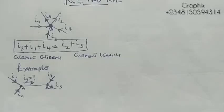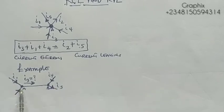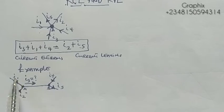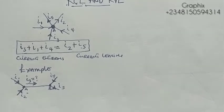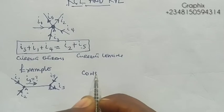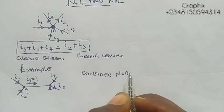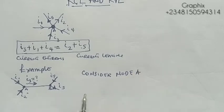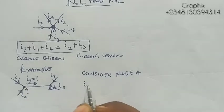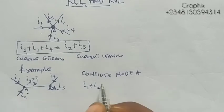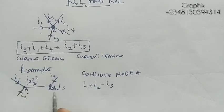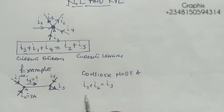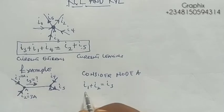Now looking at this example, we have two nodes: node A and node B, with currents coming in and leaving. At node A, the total current entering equals the total current leaving. I1 and I2 are entering, so I1 plus I2 equals I3 which is leaving. My I1 is 2 amperes and I2 is 3 amperes.